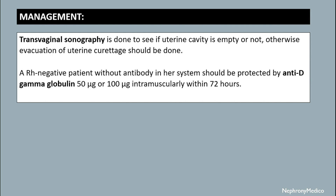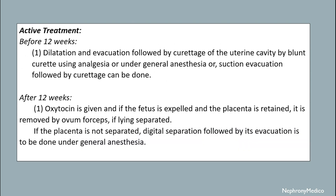Management: transvaginal sonography is done to confirm if the uterine cavity is empty or not; otherwise, evacuation of the uterine cavity should be done. An Rh-negative patient without antibody in her system should be protected by anti-D gamma globulin, 50 microgram or 100 microgram intramuscularly within 72 hours.